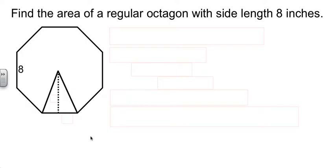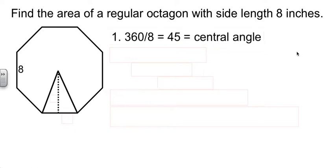So they've given me a regular octagon with a side length of eight inches, and that's all the information they have to tell us for us to be able to figure out the area. Step one is to figure out the central angle, which I've drawn in. 360 divided by eight is 45.